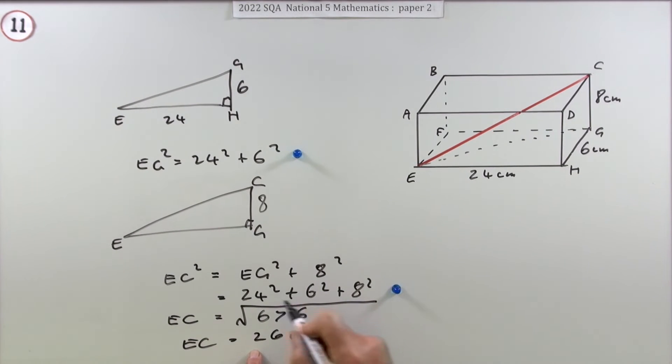Don't forget the units: centimeters, which gets the final mark. You might think, oh, that's nice and neat. Normally when you do Pythagoras and square roots, especially if there's three numbers there, you expect a nasty number as an answer.